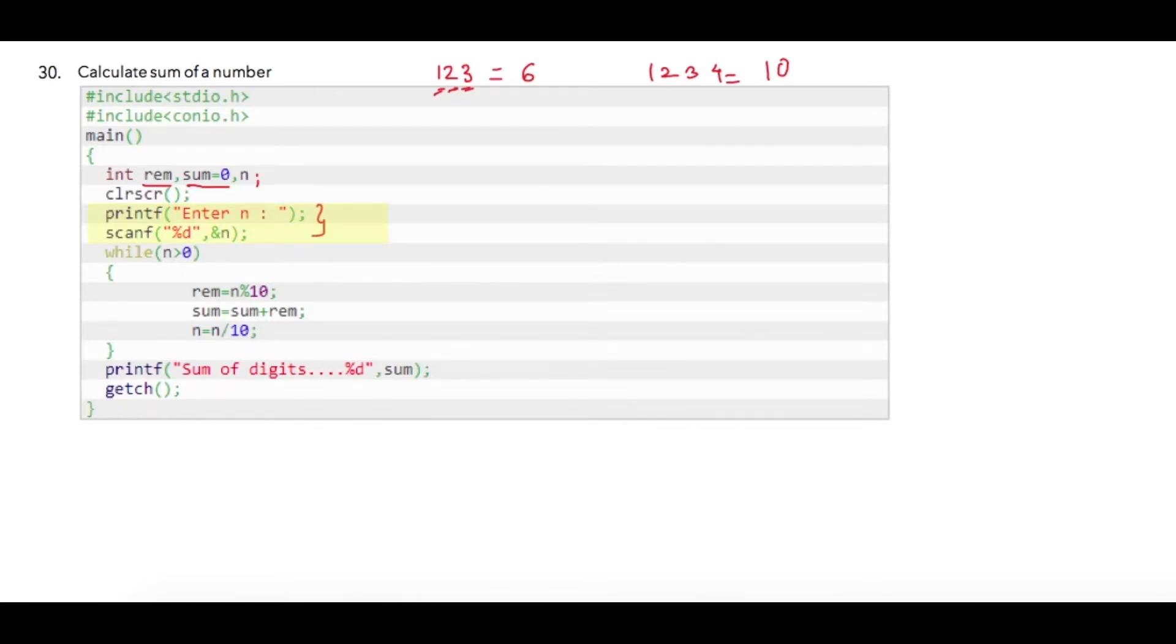Asking user to input the number, we are checking the condition n greater than zero, which is true. Suppose user has entered 123, and the condition will be 123 greater than zero, which is true, so we will get 3 over here.